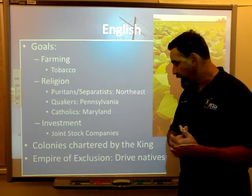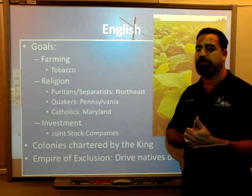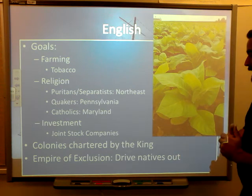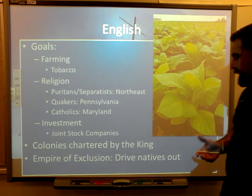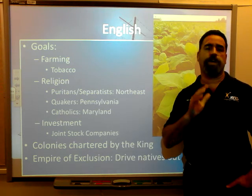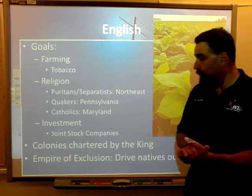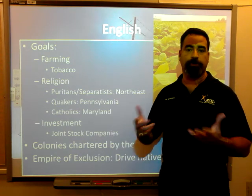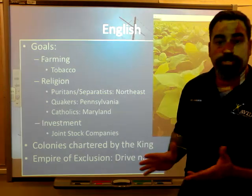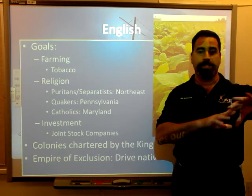When the English interacted with native peoples, they did so differently from the Spanish and French — they practiced exclusion. They created an empire of exclusion, with the idea of driving native people off the land and taking it. They did this where they could, ultimately driving many native tribes over the Appalachian Mountains, where both sides tried not to interact, or when they did interact, they would trade and then go home and stay away from each other.